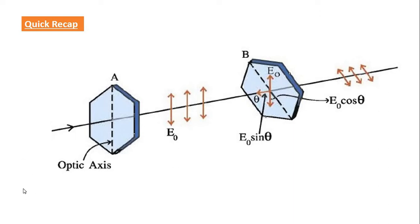Let us have a quick recap of the topic we have just now studied, Malus's law. From here an unpolarized light is going to come like this and this unpolarized light is going to fall on the polarizer. Finally it gets polarized. This is called a polarizer.